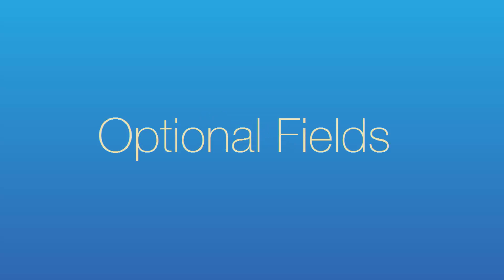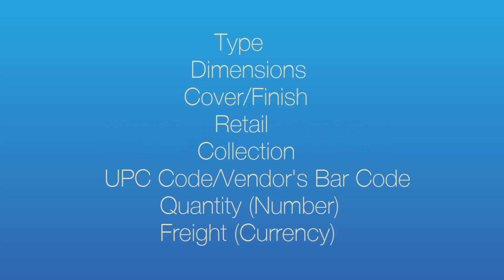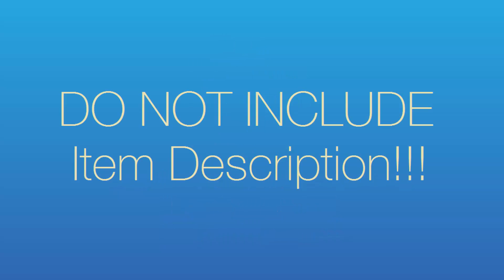Your landed cost is automatically calculated within Furniture Wizard. There are also several fields that are optional but can be imported directly into Furniture Wizard. These include type, dimensions, cover/finish, retail, collection, UPC/vendor's barcode, quantity, and freight. You will not include a field for description as this will be ignored. Furniture Wizard creates the description of the item for you using a concatenation of the fields you specify in the description preferences.